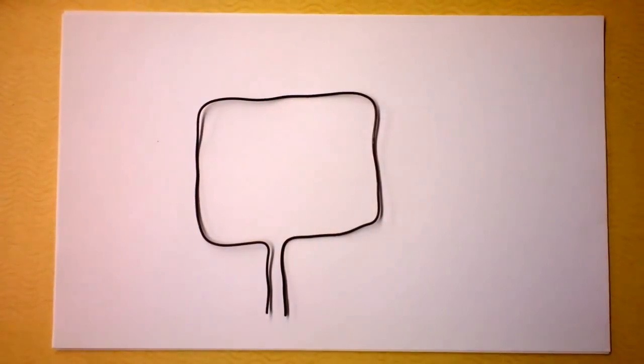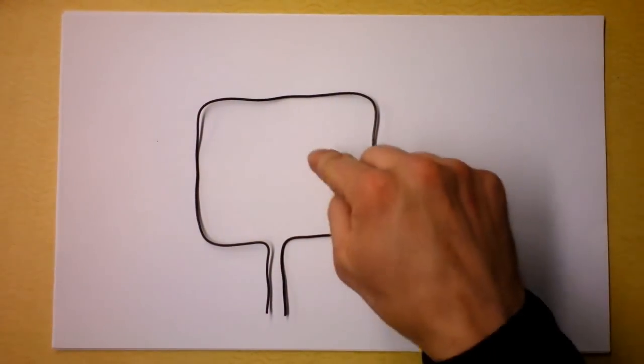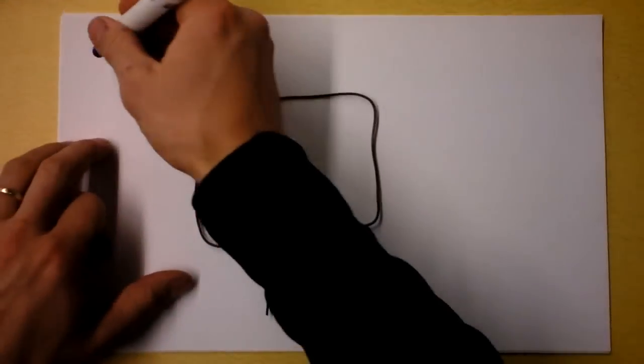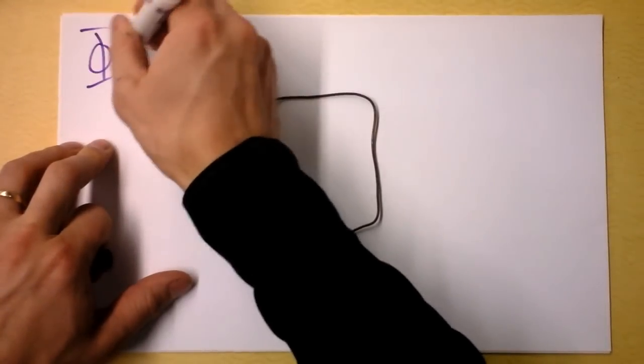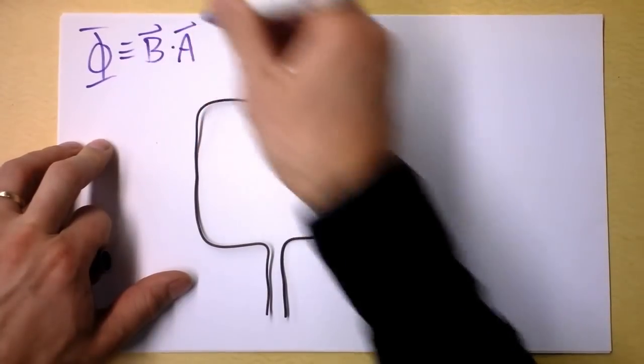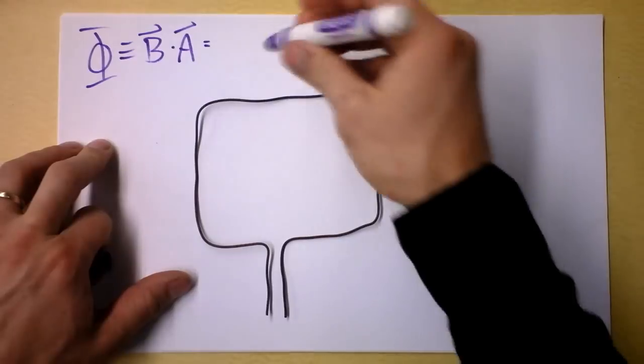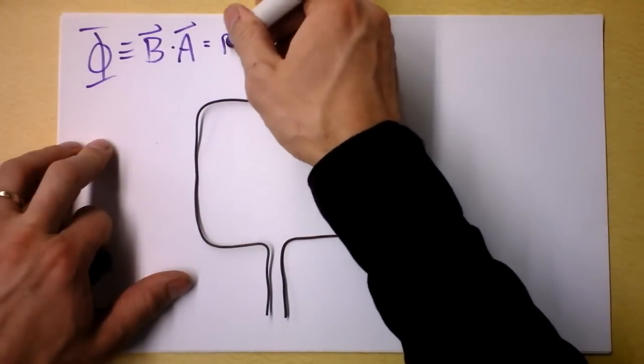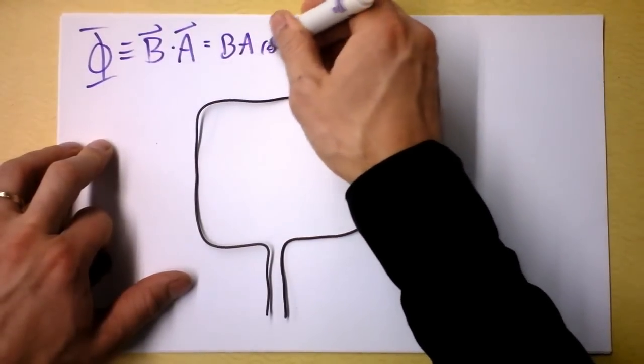We've already spoken about a couple ways that we can get the flux through this loop to change. We can just define flux again right here. Flux is magnetic field dotted into area, and that's the same thing as the magnetic field times the area times the cosine of the angle between them.